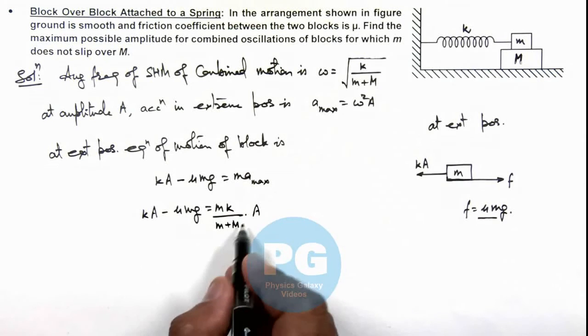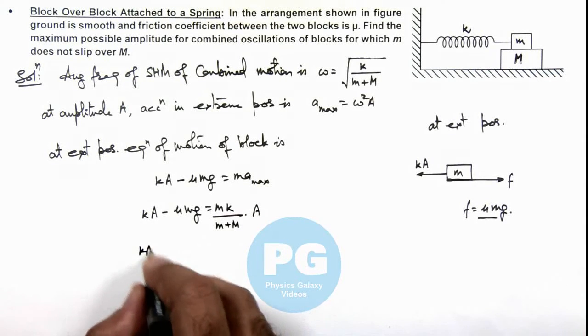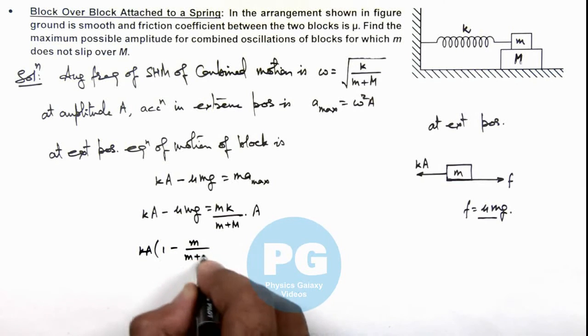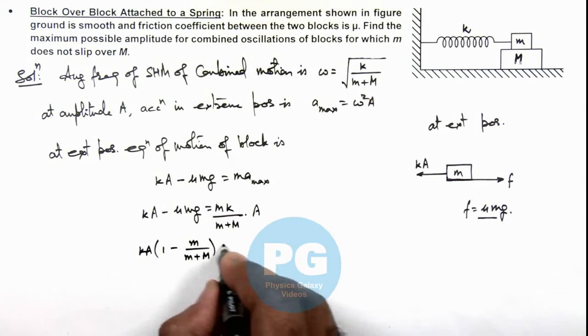On simplifying, we get k times A times one minus m divided by m plus capital M equals mu m g.